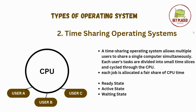Ready state is a state where users are waiting to execute. Active state is a state where the CPU executes the task. Waiting state is a state where the task might require some more time, and meanwhile the CPU is allocated to the other users.